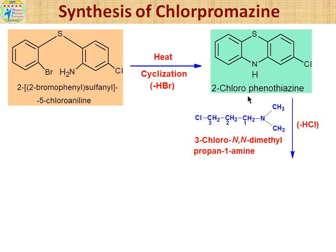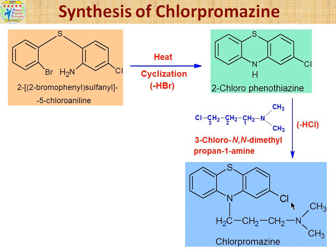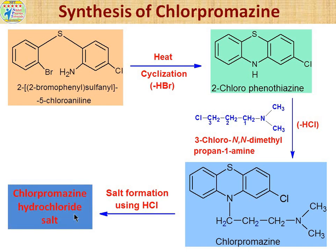In the next step, 2-chlorophenothiazine is reacted with 3-chloro-N,N-dimethylpropan-1-amine. The moiety CH2-CH2-CH2 with both hydrogens on nitrogen replaced by methyl groups is attached. HCl is removed, and ultimately the chlorpromazine drug is generated. If we want to make the salt, chlorpromazine is reacted with hydrochloric acid to obtain chlorpromazine hydrochloride.